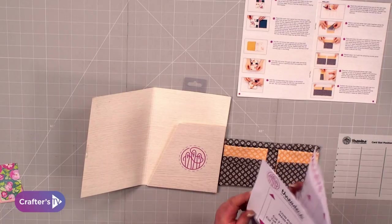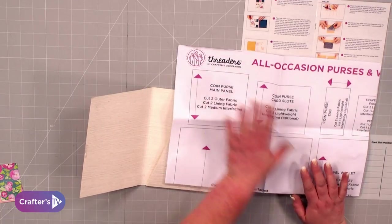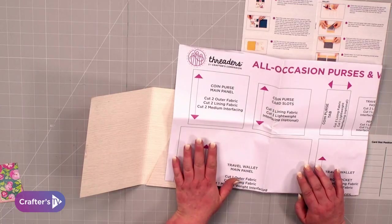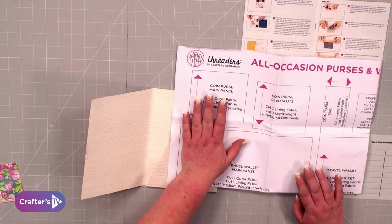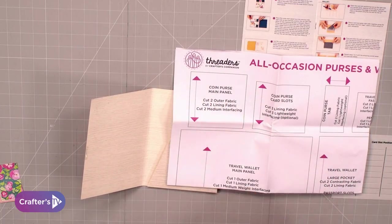Lastly, we get all the pattern pieces. Really good quality paper with all your pattern pieces on there. You're going to cut all of those out to cut your fabrics. It tells you how many to cut of each.